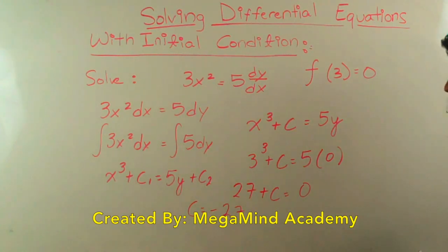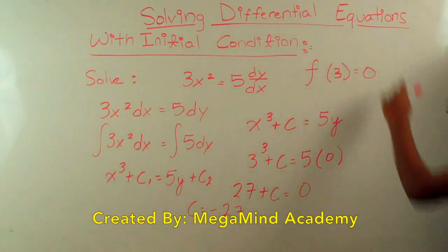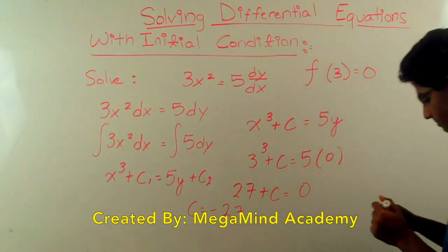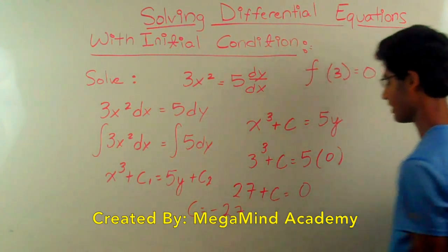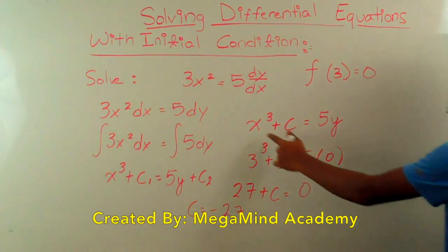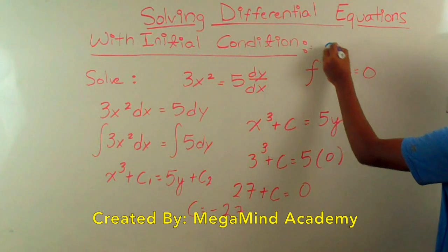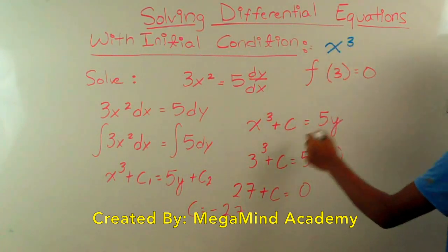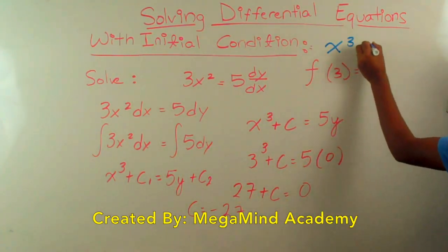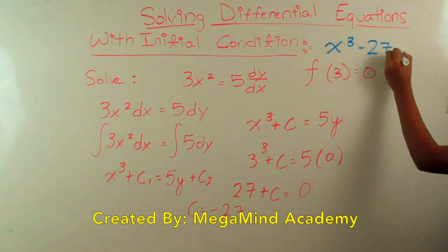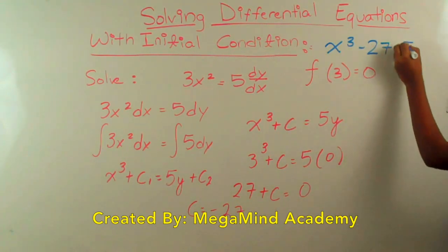So that means that the answer to this problem is x cubed plus c, which is negative 27, is equal to 5y.